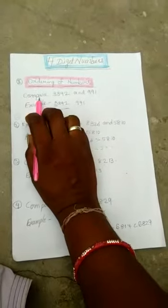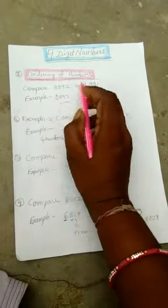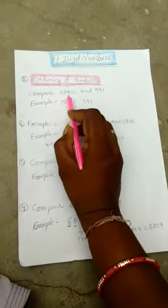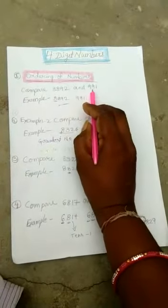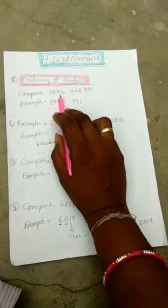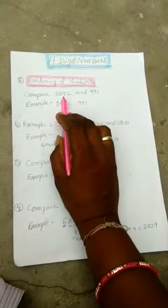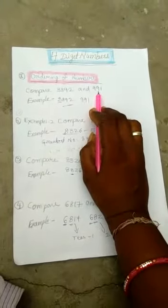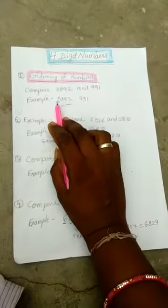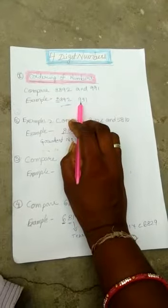Ordering numbers — again we learn how to compare numbers. You are given 3892 and 991. When we compare the numbers, we will compare the value of the digits. Here, one is a 4-digit number and the other is a 3-digit number. Easily you can compare that a 4-digit number is greater than a 3-digit number.